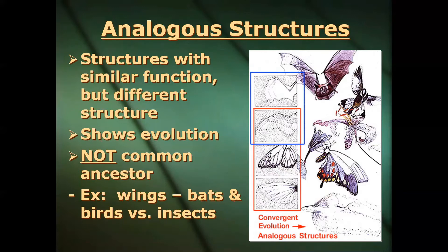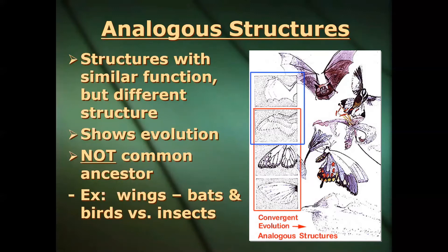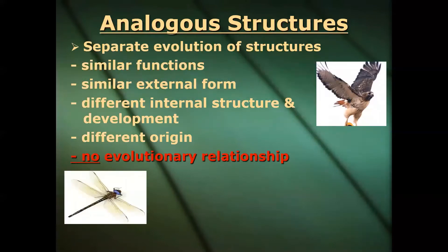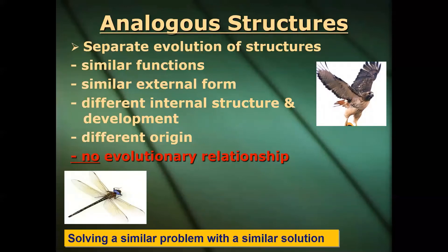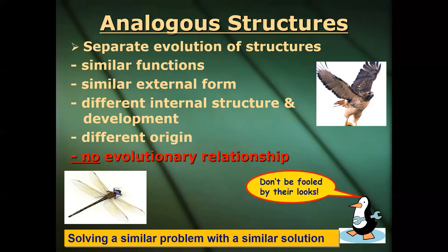Analogous structures can still show evolution and change over time, but here's the big thing: they do not show a recent common ancestor. An excellent example is comparing the wings of bats and birds to those of insects — bats and birds have actual hollow bones, while insects have just membranous tissue, but they use them for the same thing: flight. Completely different structure, and they're not closely related whatsoever. Separate evolution of these structures, similar function, but when you look at the internal structure — completely different origin and different embryological development. No evolutionary relationship. Don't be fooled by their looks.